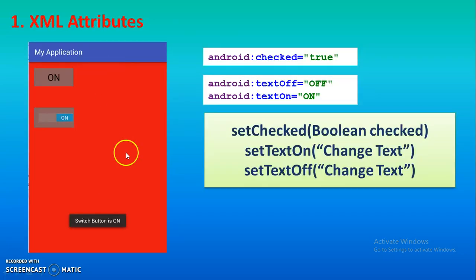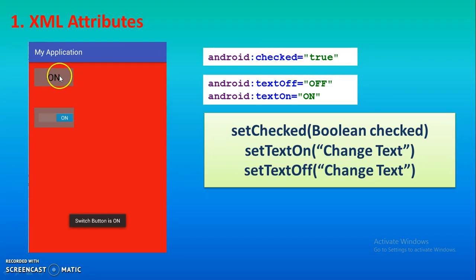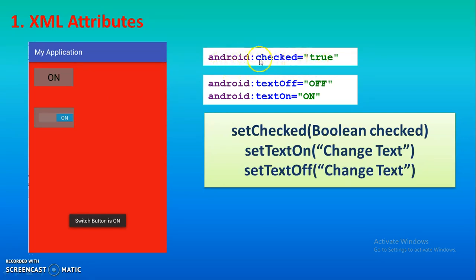Here in this application I have used a toggle button and a switch button, so its look is like that. In the XML file you can use this block of statement: android:checked — by default your toggle button or switch button will be in the true state, meaning the on state. Because by default it is in the off state, if you want to change it, you can use this attribute: android:checked equal to true, so it will be in the on state.